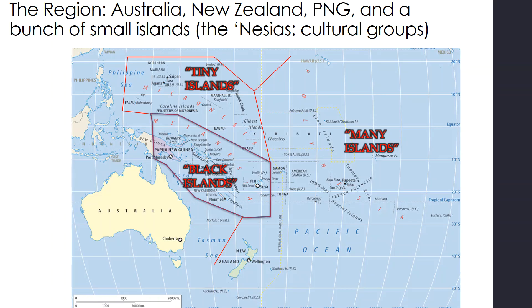We are talking about Oceania. The region is made up of Australia, New Zealand, Papua New Guinea, and a small bunch of islands — the Nesias, the three different cultural groups: the tiny islands of Micronesia, the Black Islands which include Fiji and Papua New Guinea, and then many other small Pacific islands including Kiribati and French Polynesia.